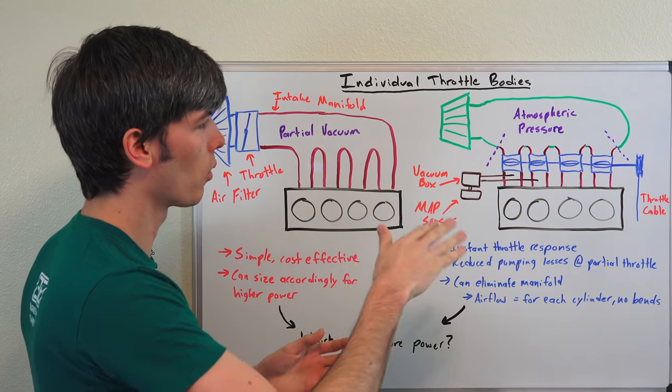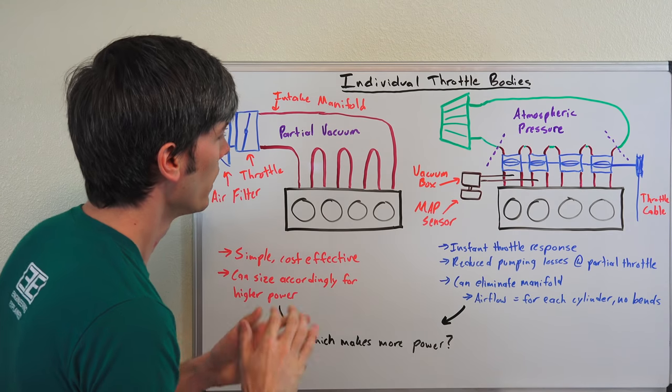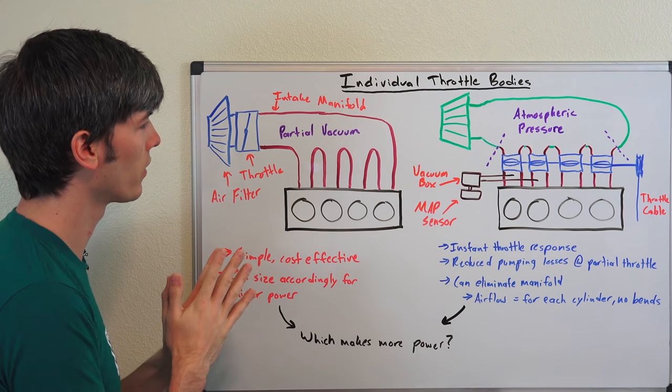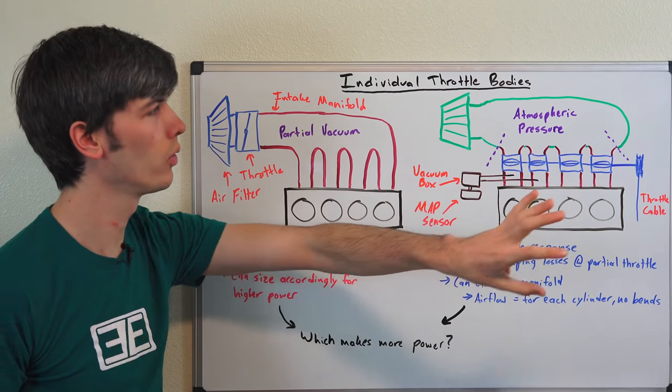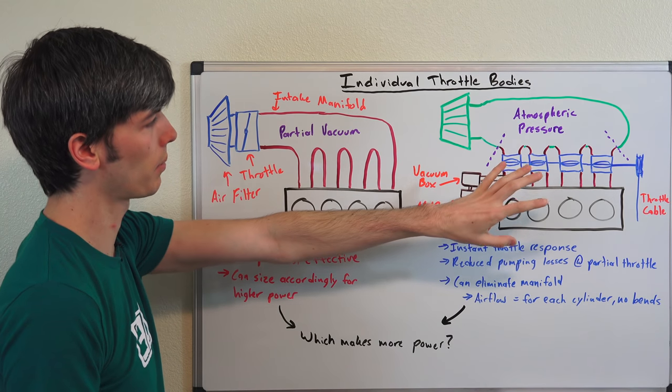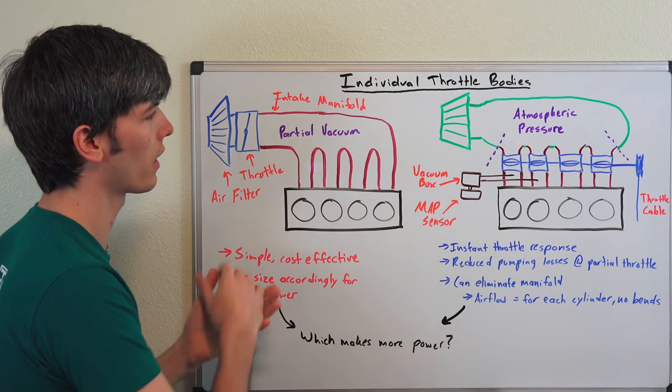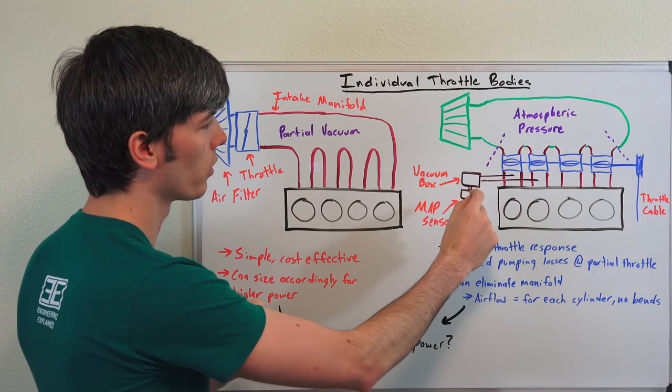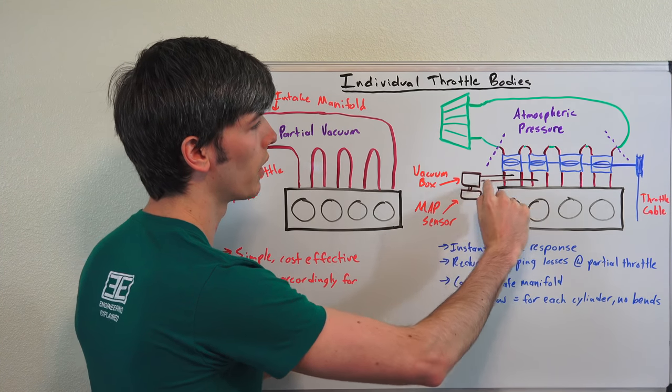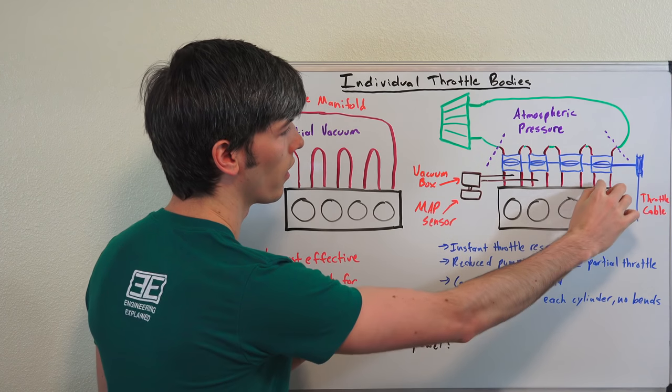Now some of the differences between these: one of the things that can be tricky which you may wonder is how do you tune the air fuel ratio for a setup like this where you don't have that massive intake manifold with the vacuum which you can determine. So what you'll do is you'll actually tap in vacuum lines into each of these intake runners here.